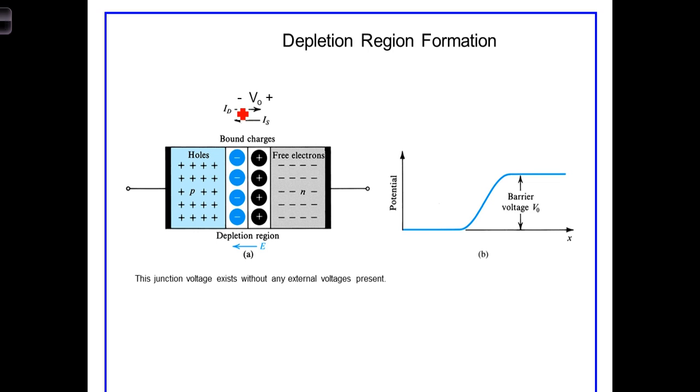This junction voltage influences the junction dynamics in two ways. First, as its name implies, the voltage creates a barrier or opposes further diffusion. The greater the voltage, the less carriers are able to diffuse.